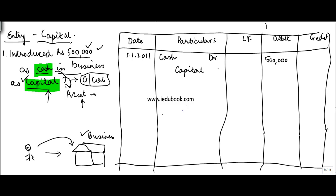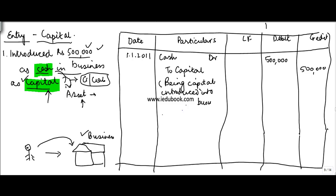So we credit capital account. Instead of writing 'credit' here, what we do is write 'to capital,' and then I put in a small narration: 'being capital introduced into business.' If you know the name of the person, you can write 'by XYZ' or whatever it is.